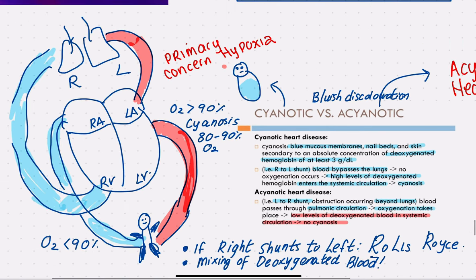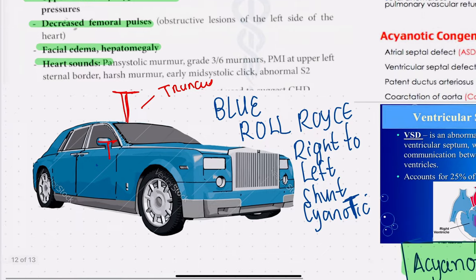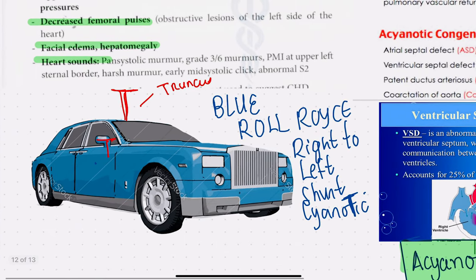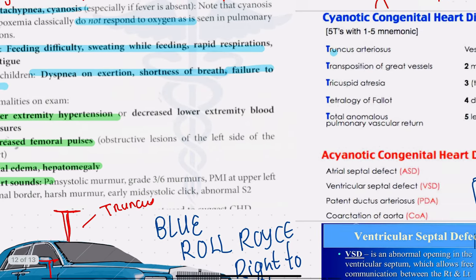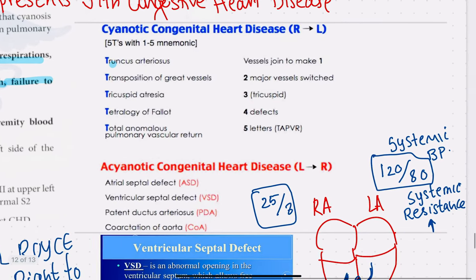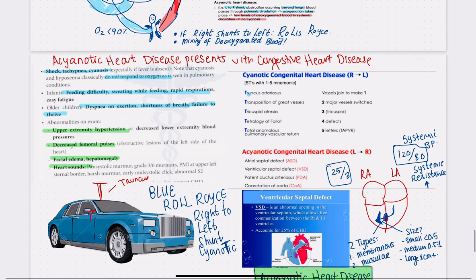To remember that a right-to-left shunt means cyanosis, think of a blue Rolls Royce. The cyanotic heart diseases typically start with T's: truncus arteriosus, transposition of the great vessels, tricuspid atresia, or tetralogy of Fallot. The acyanotic heart diseases — the left-to-right shunts — are abbreviated as ASD, VSD, PDA, and coarctation of the aorta.